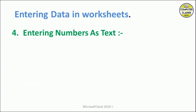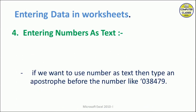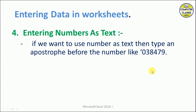Next is entering numbers as text. If we want to enter a number and have it considered as text, we should put an apostrophe before the number. For example, if you enter a number with a leading zero without an apostrophe, that zero will be dropped. MS Excel will preserve the zero in cases like telephone area codes or roll numbers only if you put an apostrophe before the number, which causes it to be treated as text.